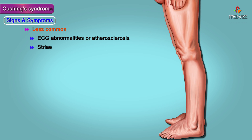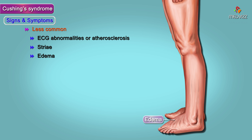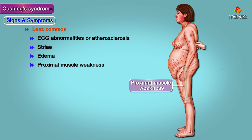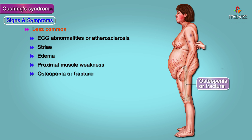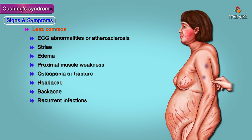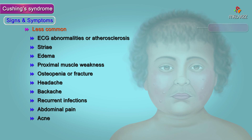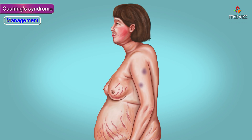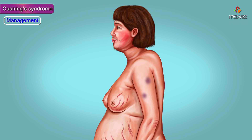Less common signs and symptoms include ECG abnormalities or atherosclerosis, striae, edema, proximal muscle weakness, osteopenia or fracture, headache, backache, recurrent infections, abdominal pain, acne, and female balding.